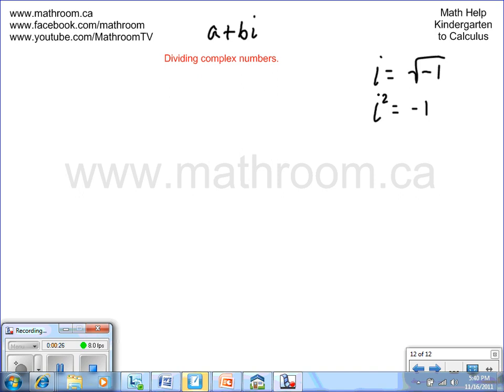So let's take a look at a question like 2 plus 3i divided by 4 minus 2i. Now the only way we can solve this is we need to multiply that expression by the conjugate of the denominator, which is simply the same two terms with an opposite sign. So it's 4 plus 2i.